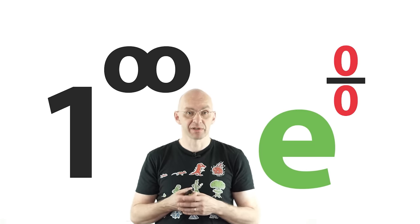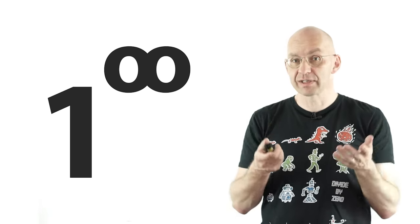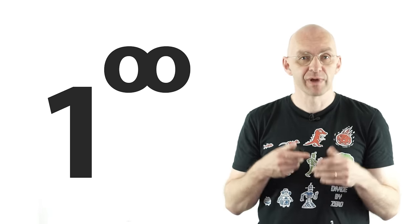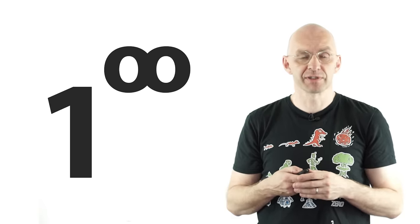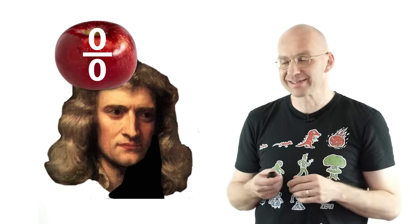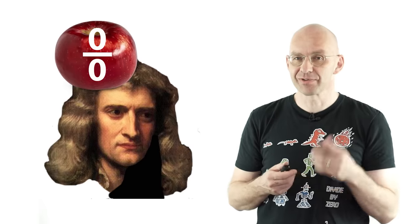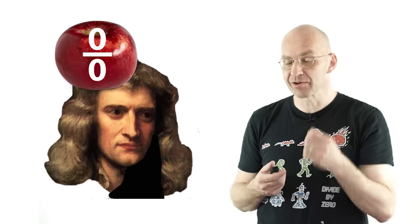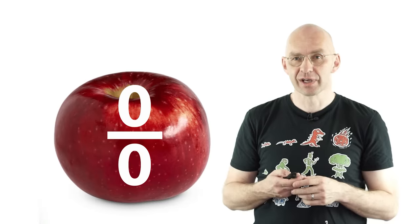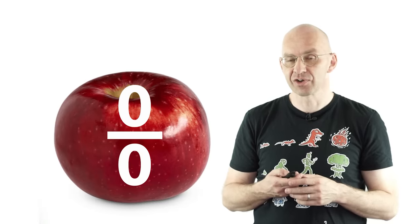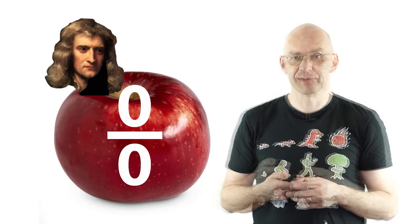And you can do this for all the other ones. So far, apart from this very very simple x squared example, we haven't actually figured out any other expression. So how do you actually do this in practice? What I've tried to push here is that the apple that hits Newton was really a zero by zero apple, a zero by zero apple makes calculus, but you can also go the other way around. Once you've got calculus, you can actually hit the zero divided by zero with it. How does that work?